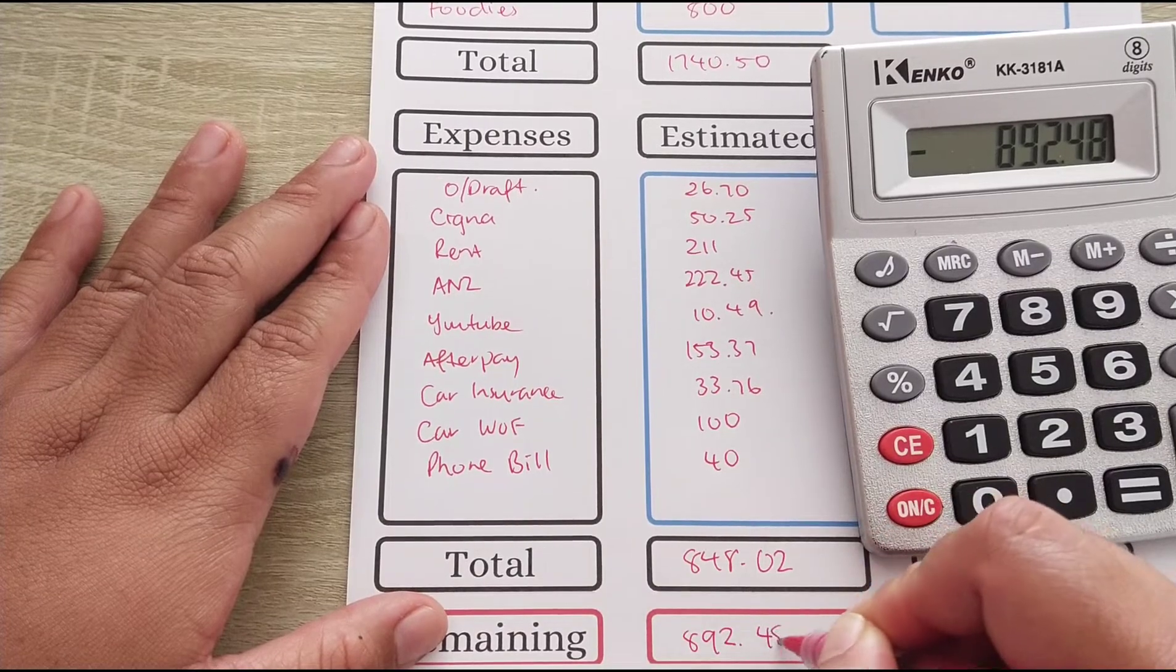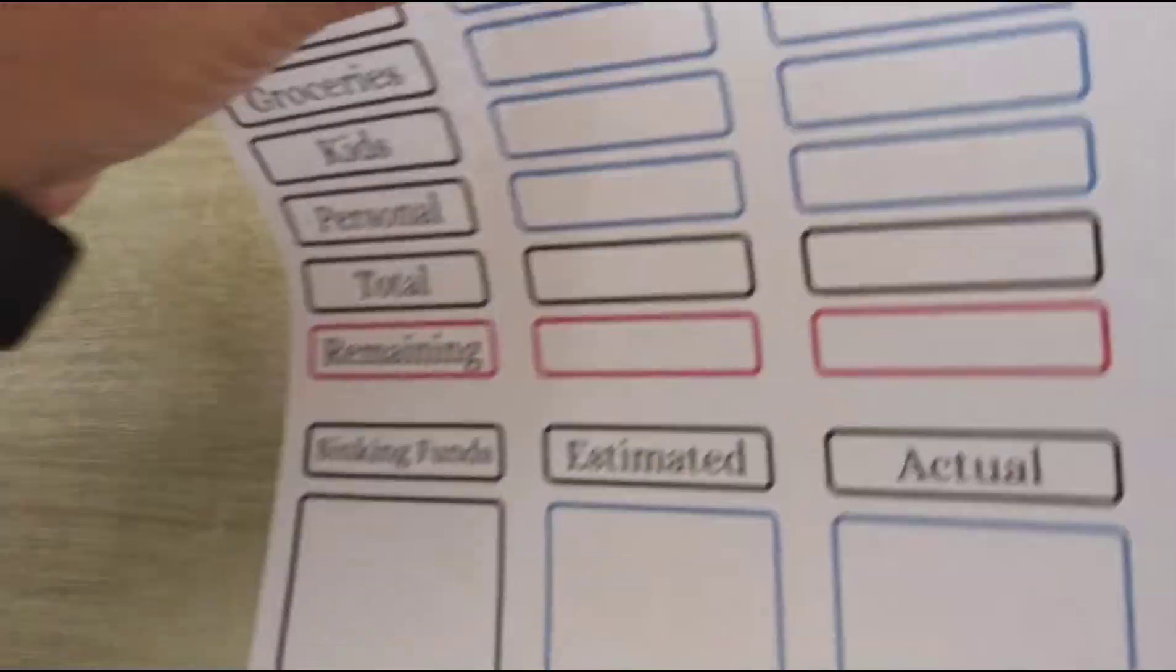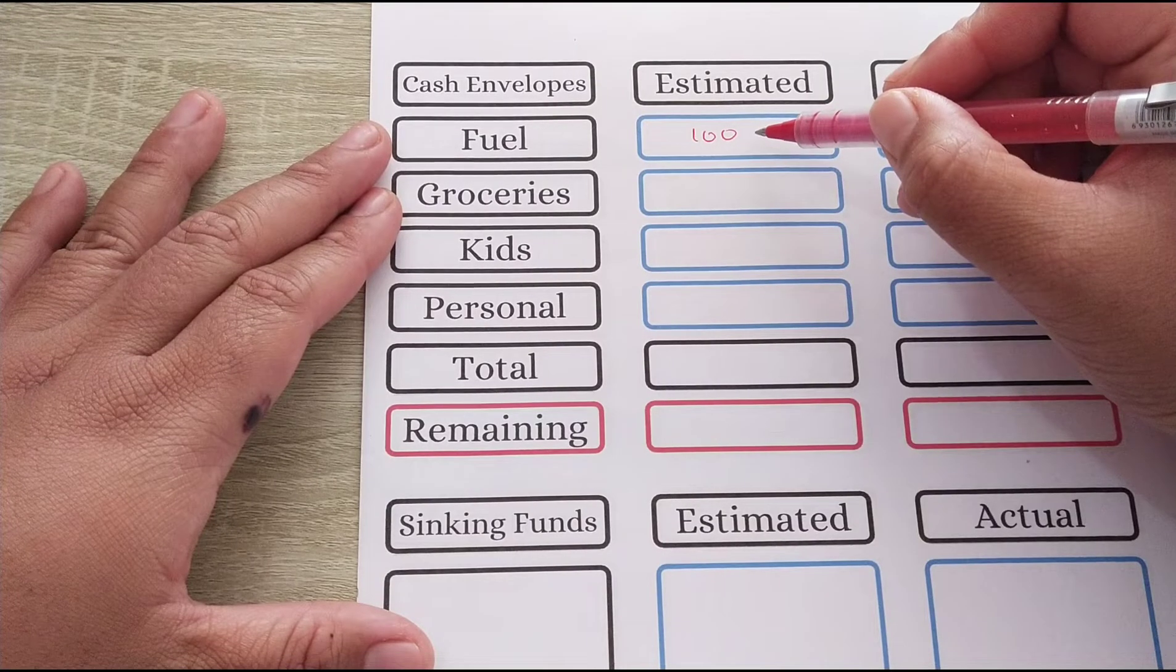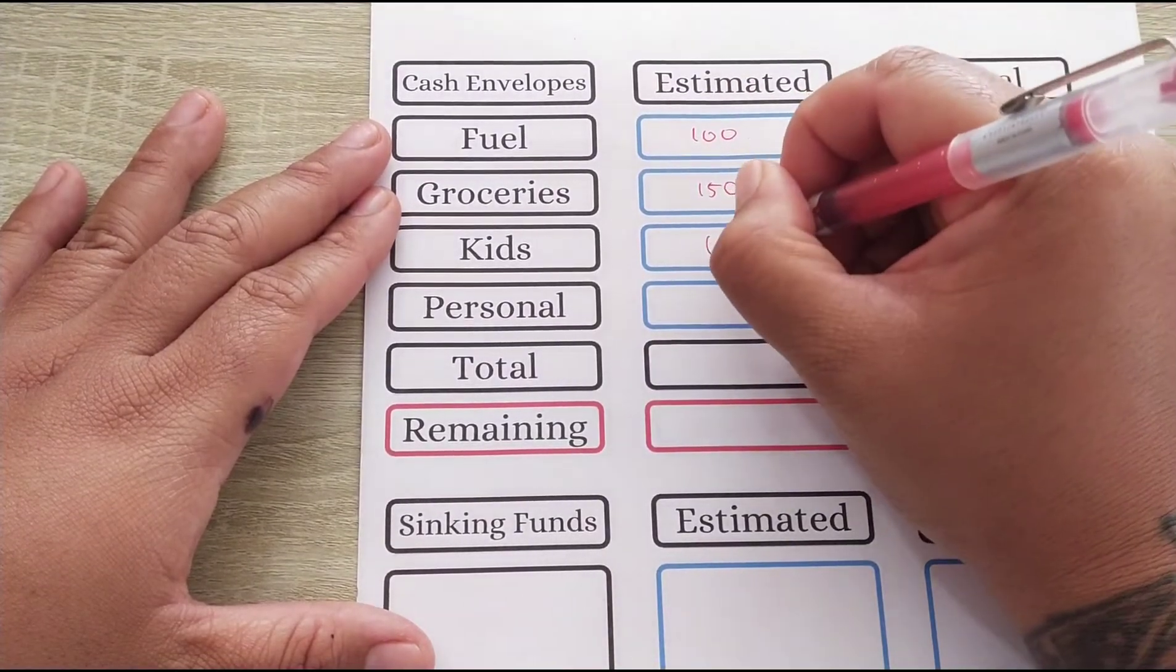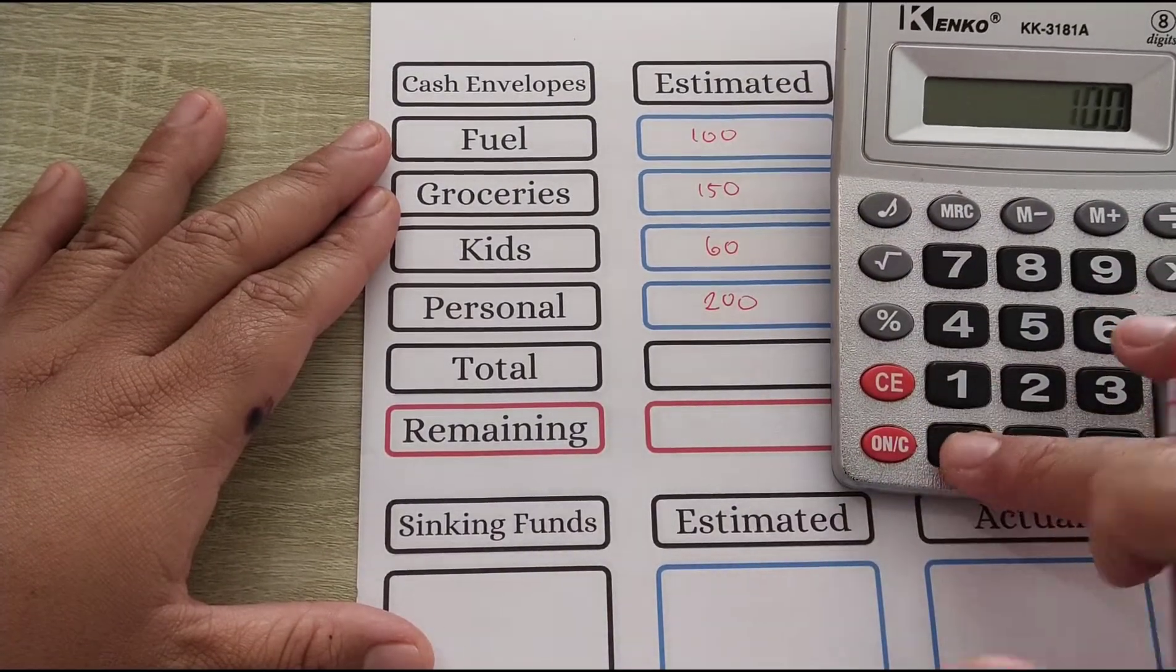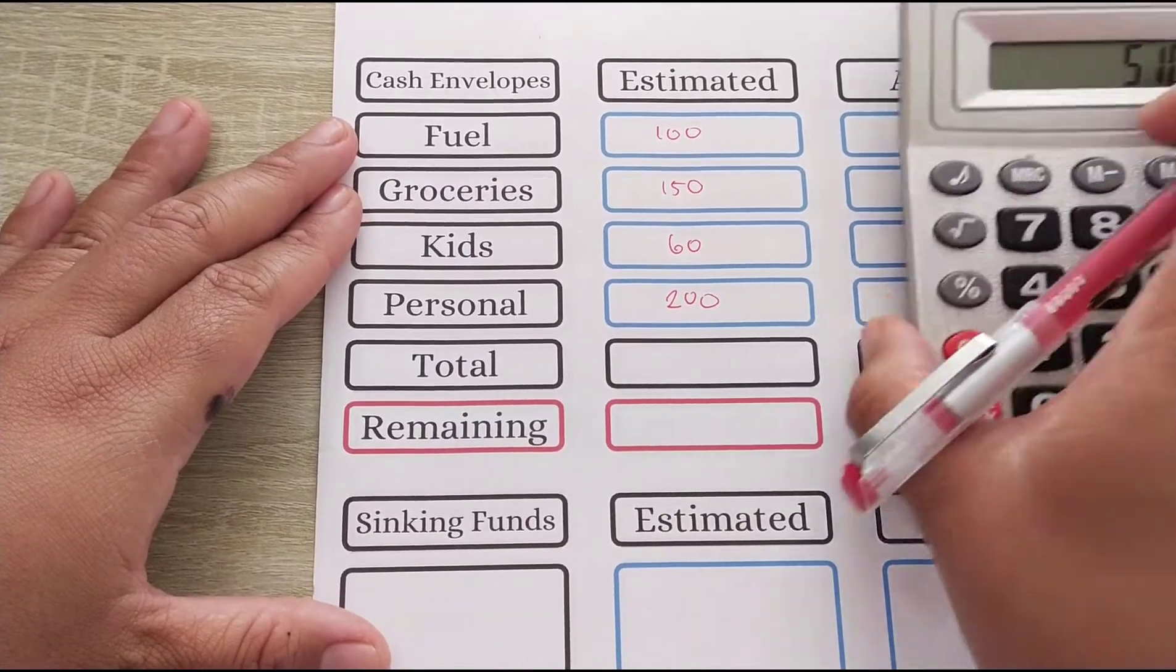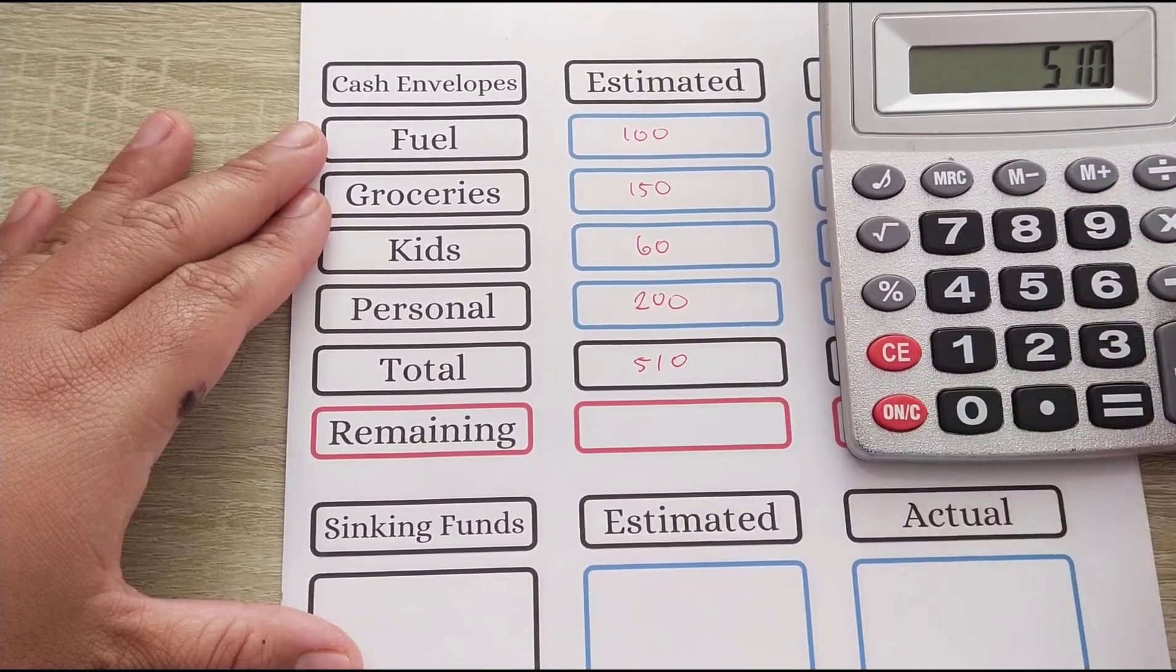All right, so we are now going to work on our cash envelopes of the week. For fuel I'm putting $100. I might add a bit more because it is another long weekend next week. Groceries I'm adding in $150, so I am increasing that. Kids for $60 and personal I am increasing that as well. I'm trying to be realistic with our budget every week. So if we were to actually get a smaller amount, I will make it realistic for that week.